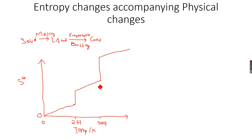Now at 373 Kelvin, where water turns into a gas — water vapour, not steam — so when water turns into water vapour, then there will again be a steep increase in entropy, because there is a change of state. And gases are much more disordered than liquids, so there will be a steep increase in entropy. And there will be no change in temperature, because when a change of state is taking place, there is no change in temperature.